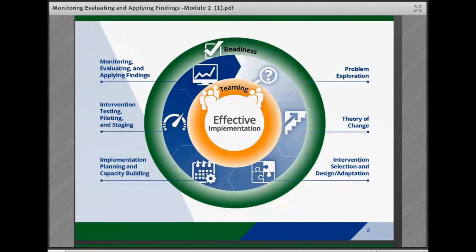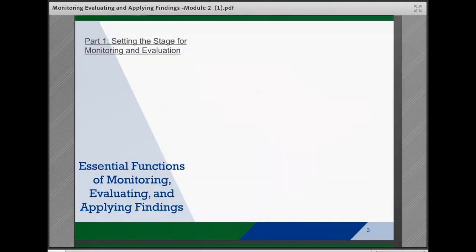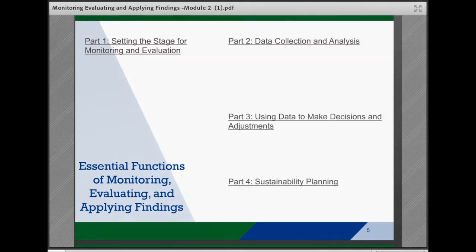The Monitoring, Evaluating, and Applying Findings brief is intended to help child welfare agency leaders, managers, and stakeholders take a structured approach to plan for and execute strategies to monitor and evaluate implementation efforts and interventions, strategies to collect and analyze data for a variety of evaluation types, and then use data to make decisions and plan for sustainability of programs where feasible.